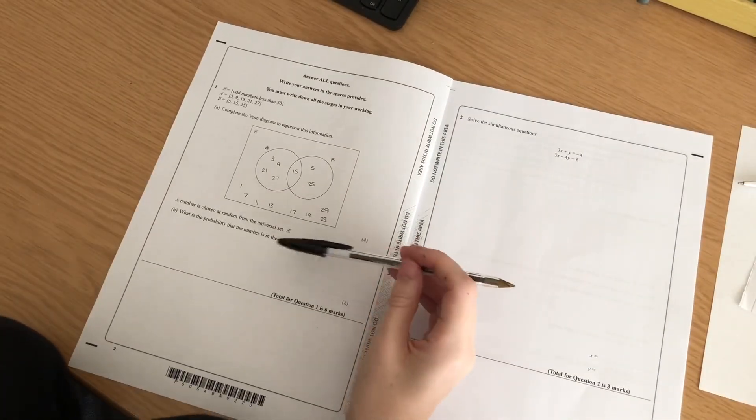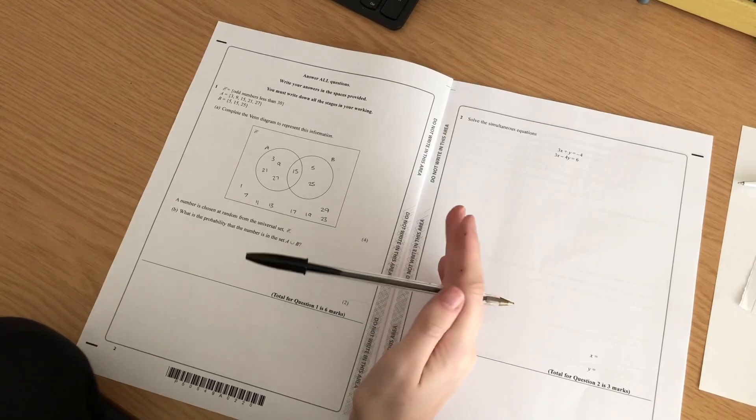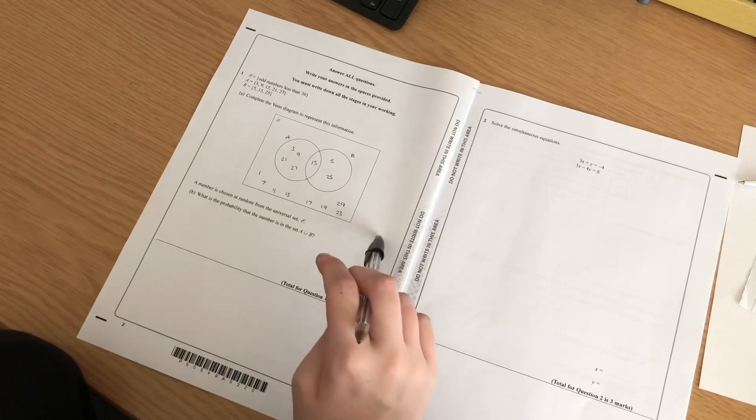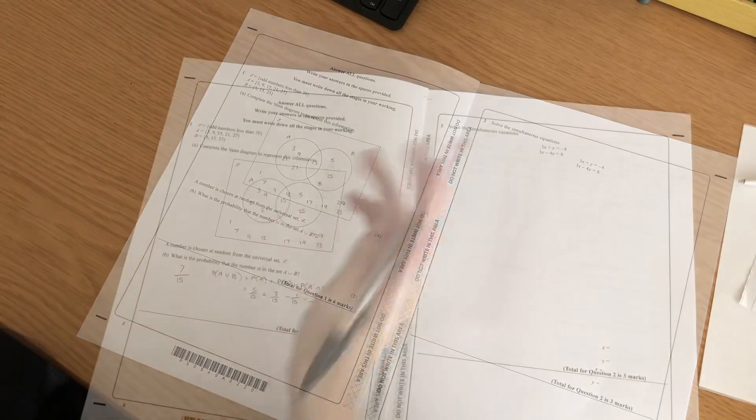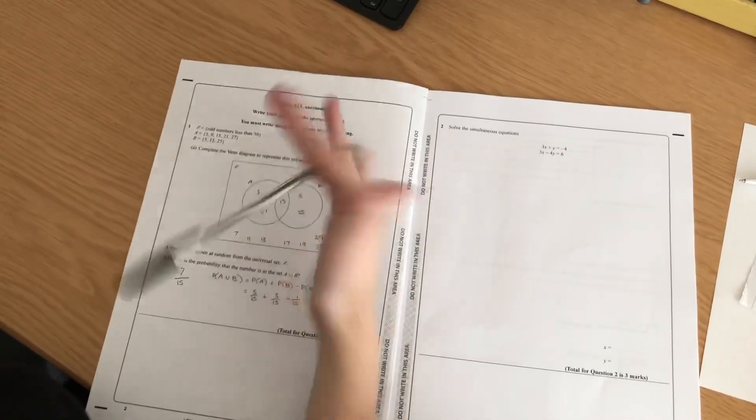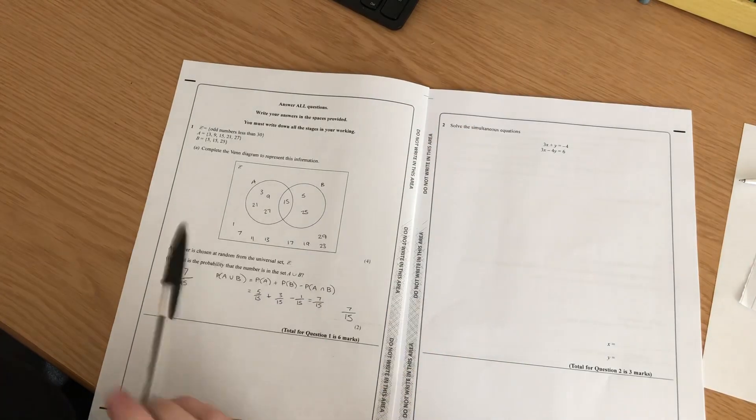So this is actually a really interesting question because the way I would look at this now from A-Level is that you would use the formula. So I'm going to try and do it two different ways and see if I get the same answer. You can tell just from looking at the Venn diagram that there are 7 out of 15, but if you use the formula you still get 7 out of 15. So that's what you learn to do at A-Level.